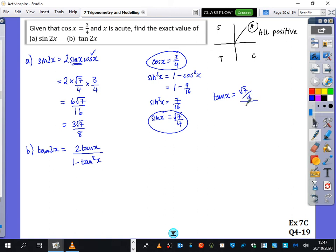So that's root 7 over 4 over 3 over 4. The 4s cancel, and we just get root 7 over 3.